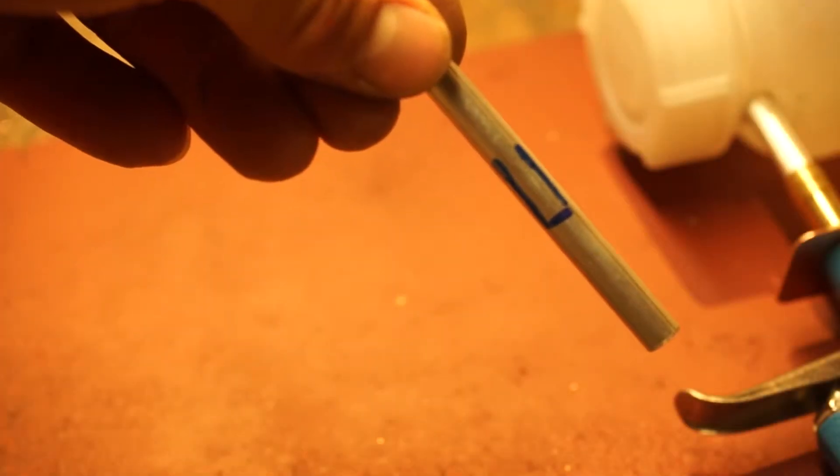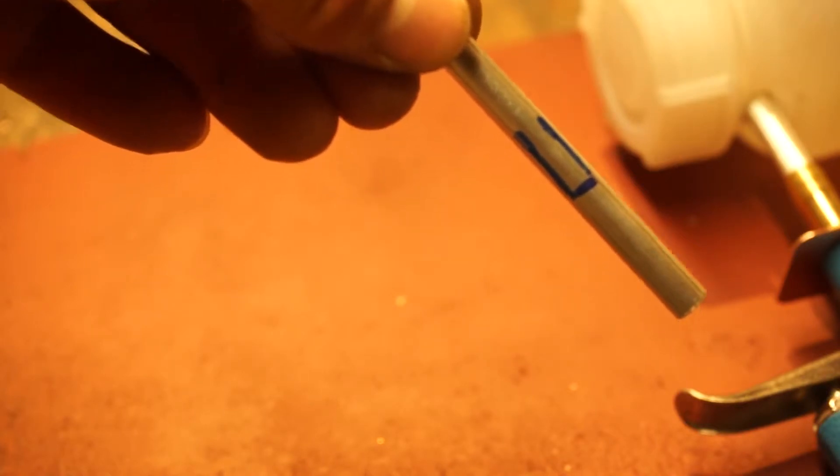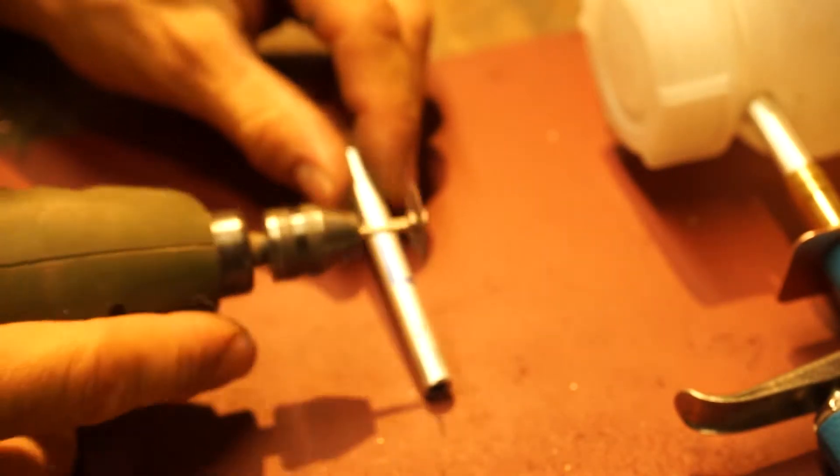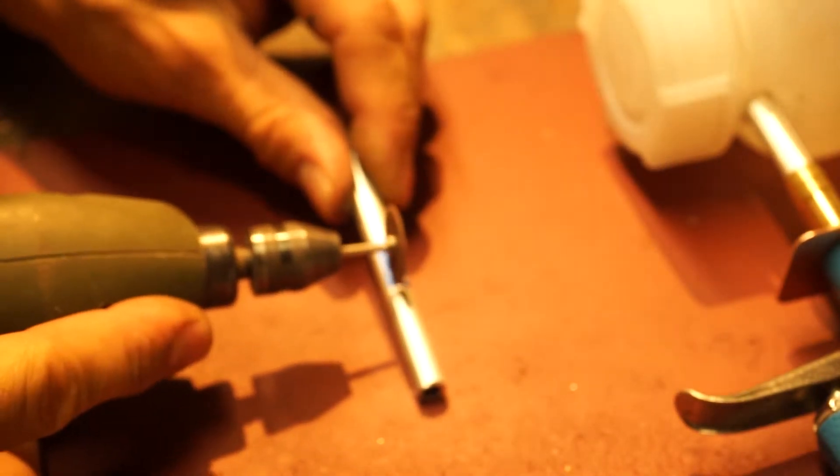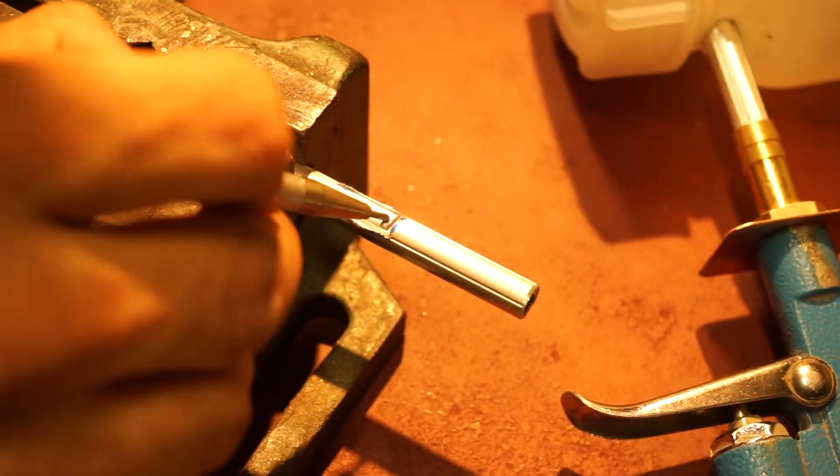To make this thing you need to cut a rectangular in your aluminum tube, but leave one side. Just like this. So when you're done with this, you push this flapper back into the tube.